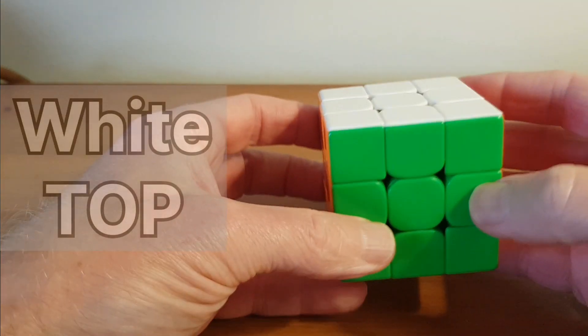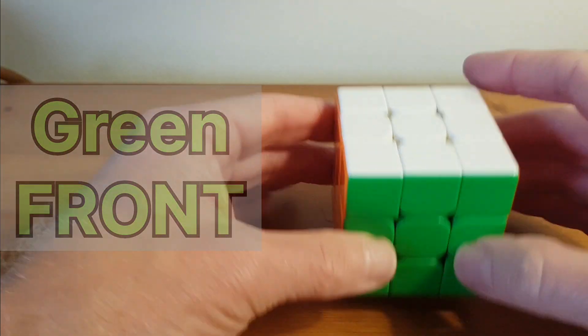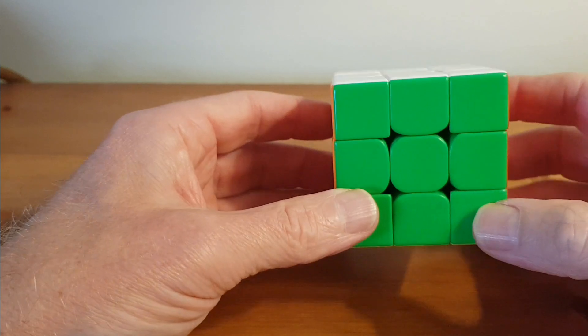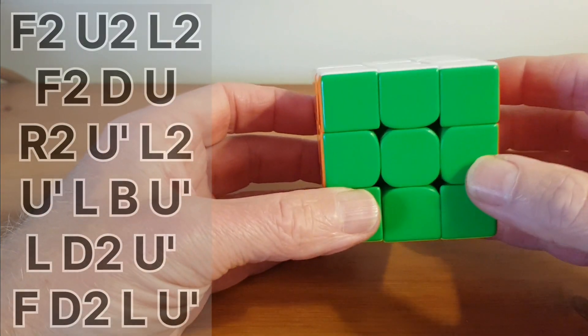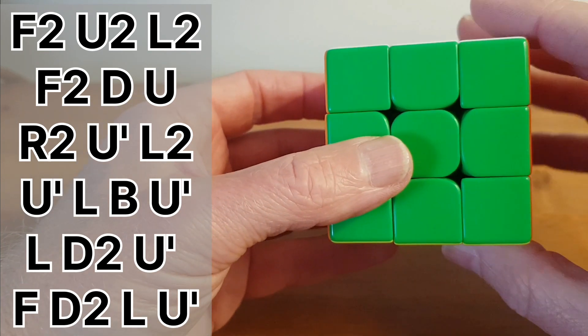Of course, we always solve the cube and scramble the cube with the white on the top and the green at the front. So let's just follow a solve through that I've put on the screen here.